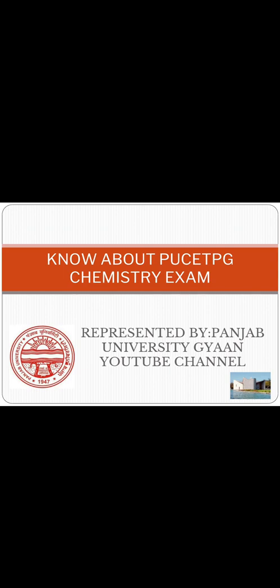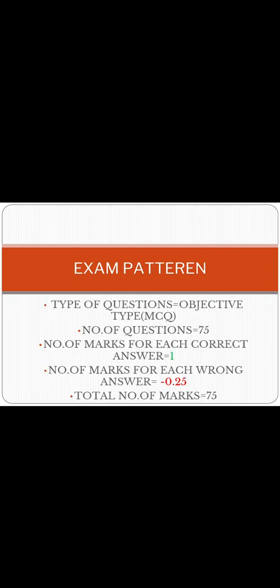In my first slide, the title shown is 'Know about PU CET PG Chemistry Exam,' which is very important. First, I'll discuss the exam pattern. The question type is objective — MCQ type. The number of questions is 75. Each correct answer carries 1 mark and each wrong answer carries minus 0.25, meaning negative marking is present. The total number of marks is 75.